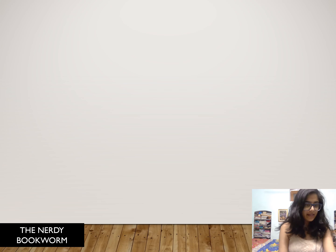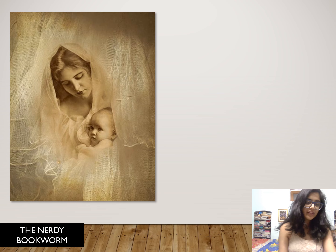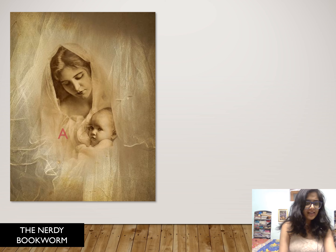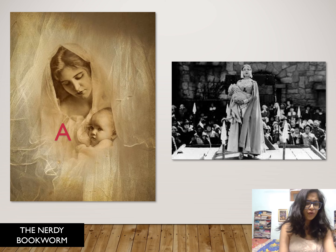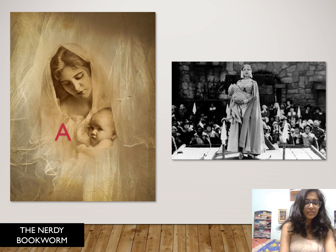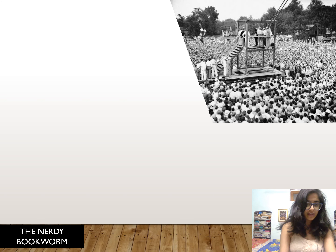The book begins with Hester, with her illegitimate daughter Pearl in her arms, at the scaffold being publicly shamed for having committed adultery. Hester is forced to wear the letter A on her chest at all times as a symbol of shame and adultery. On the scaffold, she refuses to reveal the name of Pearl's father. The minister Arthur Dimmesdale continuously asks her for the identity, but she protects him in front of the identity parade.